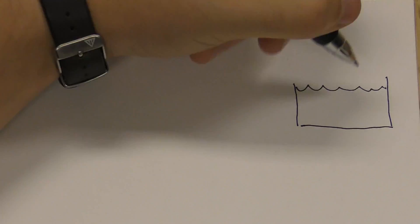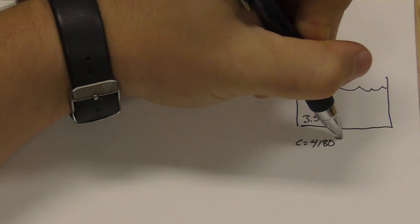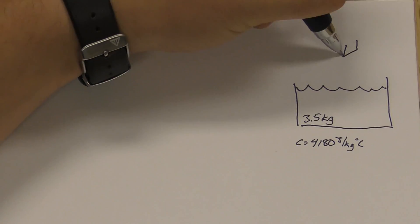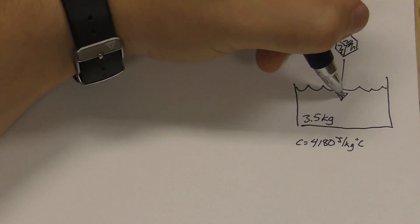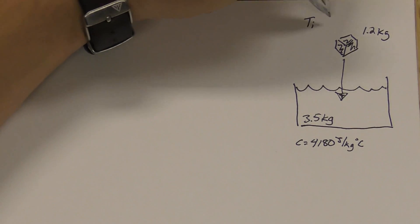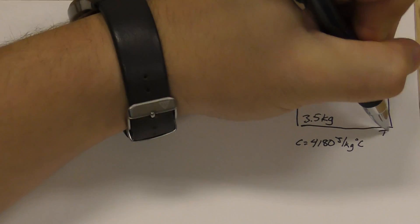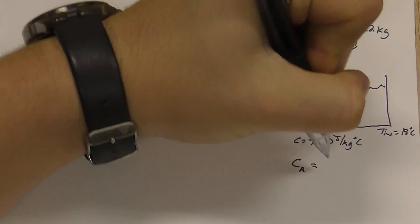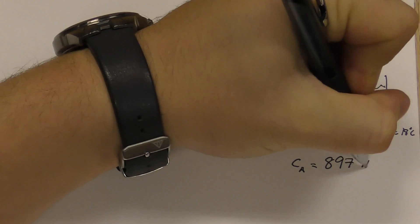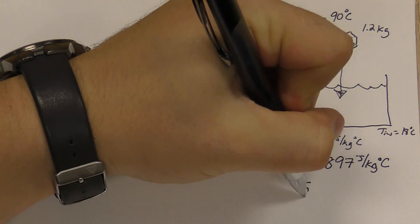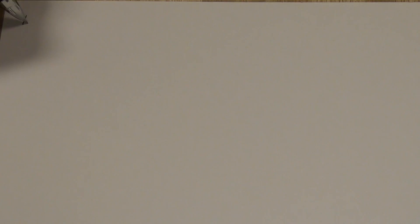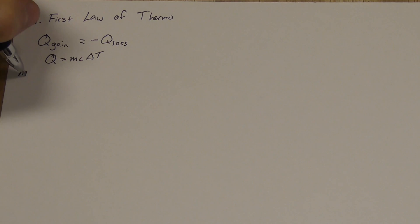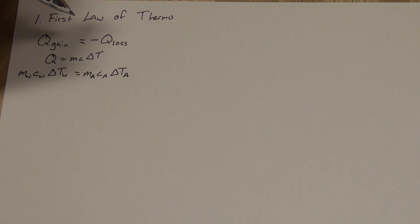Let's look at another example. Let's say we have another bucket of water with 3.5 kilograms of water at 18 degrees Celsius. This time, we drop in a 1.2 kilogram block of aluminum at 90 degrees Celsius. How would we find the final temperature? Well, we'll set it up the same way: Q gain equals negative Q loss, or M_W C_W delta T_W equals negative M_A C_A delta T_A.